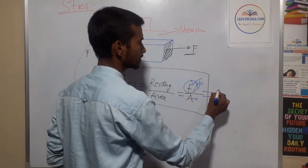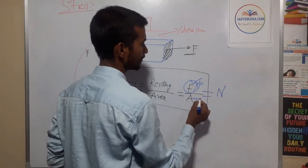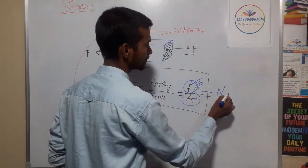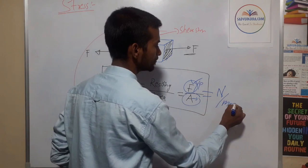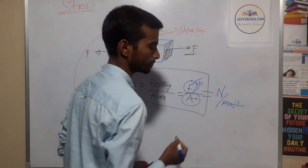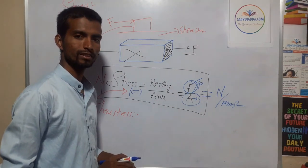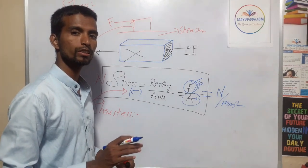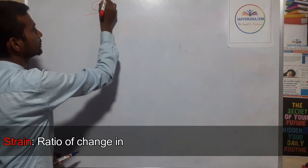Remember, stress is denoted by Sigma. Force F or P is the applied load, area is A. The units are: for force — Newton, and for area — mm squared, giving stress units of N/mm².